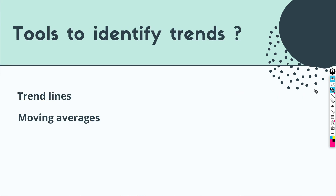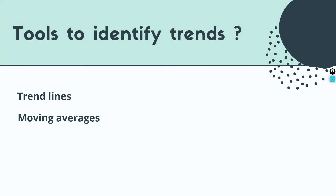The last topic is tools to identify trends. If the stock is in a clear uptrend, there are some technical indicators and tools to help. The most accurate results come from trend lines and moving averages. I will explain these in depth in further videos.